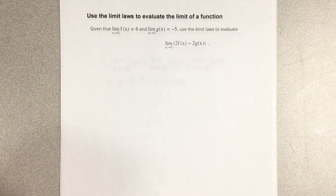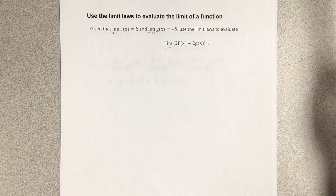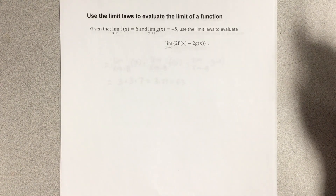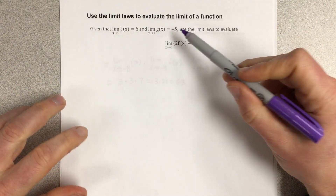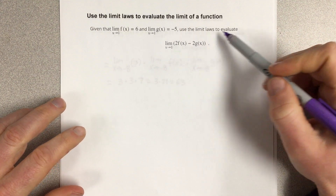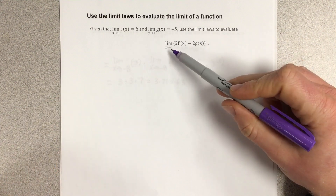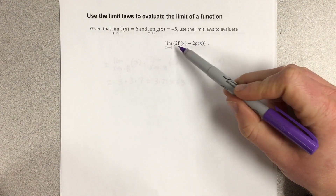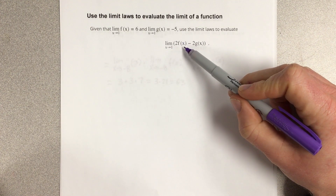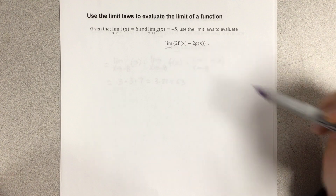In this video we're going to use the limit laws to evaluate the limit of a function. Given that the limit as x approaches 1 of f of x is 6 and the limit as x approaches 1 of g of x equals negative 5, use the limit laws to evaluate the limit as x approaches 1 of 2f(x) minus 2g(x).